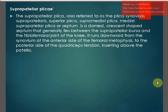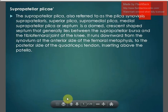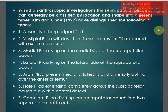The suprapatellar plica, also referred to as plica synovialis suprapatellaris, superior plica, supra-medial plica, medial suprapatellar plica, or septum, is a dome-shaped crescent septum that generally lies between the suprapatellar bursa and the tibiofemoral joint of the knee. It runs downward from the synovium at the anterior side of the femoral metaphysis to the posterior side of the quadriceps tendon insertion above the patella. Based on arthroscopic investigation, the suprapatellar plica can be classified by location and shape into different types, as done by Kim and Kovey in 1997.